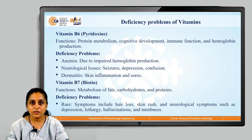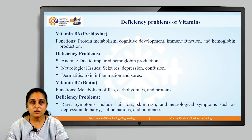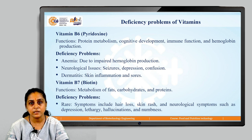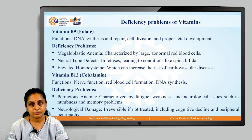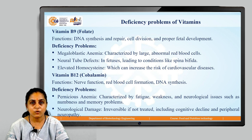Next, let us talk about vitamin B7, also known as biotin. The functions of biotin involve metabolism of fats, carbohydrates, and proteins. The deficiency problems of vitamin B7 are rare. Moving on, vitamin B9, also known as folate, has functions involving DNA synthesis and repair, cell division, and proper fetal development. Deficiency problems of vitamin B9 or folate involve megaloblastic anemia, neural tube defects, and elevated homocysteine in our body.